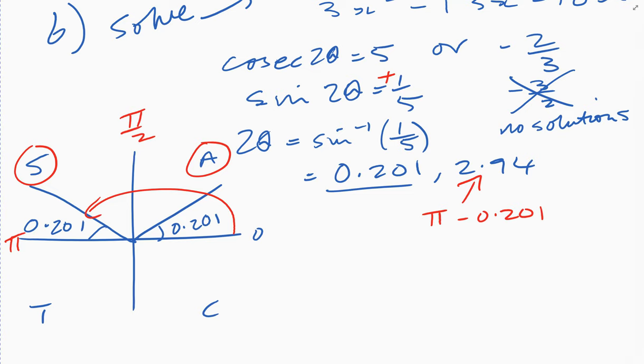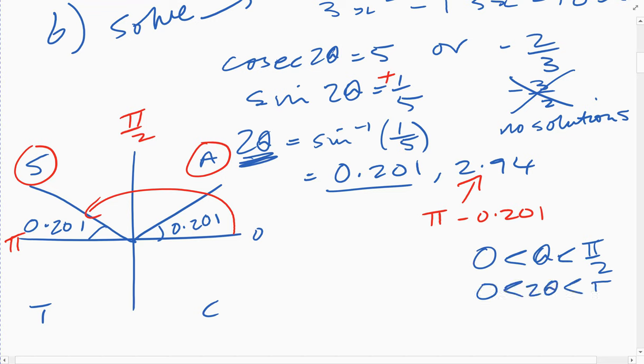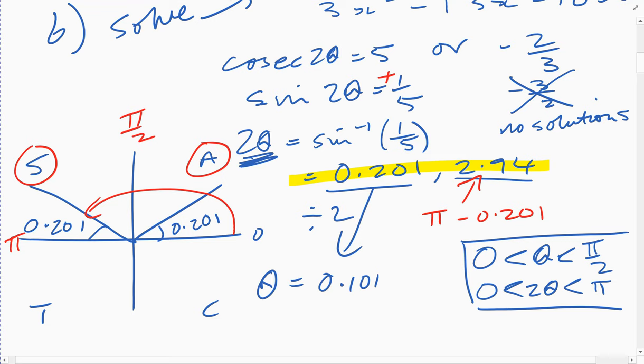We're going to be outside the range now if we go any further because we only want 0 to pi over 2. So the range for theta is this, so the range for 2 theta, which is what we're working out, is 0 to pi. You can see we're going to end up going past pi if we find any more. This is what 2 theta equals. So divide everything by 2. Theta is this divided by 2, which is going to give us 0.101, and this divided by 2, which is 1.47.